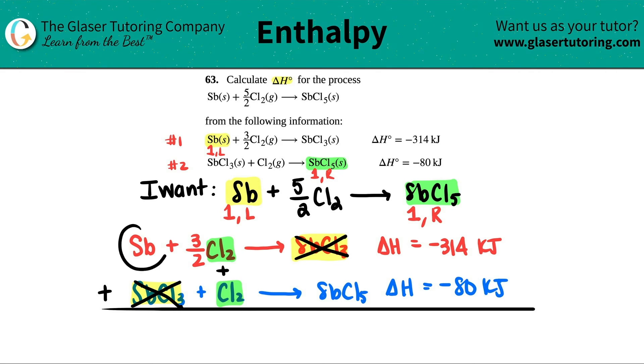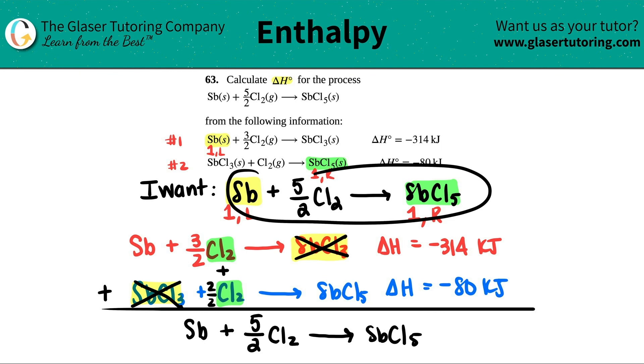Nothing else I could cancel, so let's just rewrite it. I got one Sb plus now three over two plus basically one. If you wanted to do it in fraction form, this would be the same as two over two, because two over two is equal to one. And then if you add fractions together, you keep the denominator, so the two stays. And then you add the numerators, three and two is five. And now I get the SbCl5. And look, this is exactly the equation that I want. So all I got to do now is just add up the delta H's. So it'd be 314 plus 80. So negative 394 kilojoules. And that is your answer.